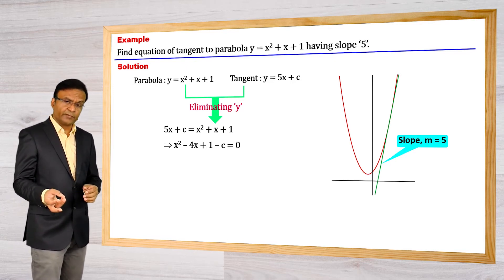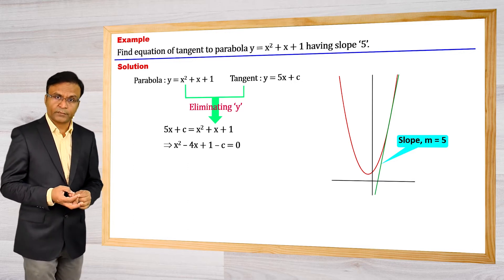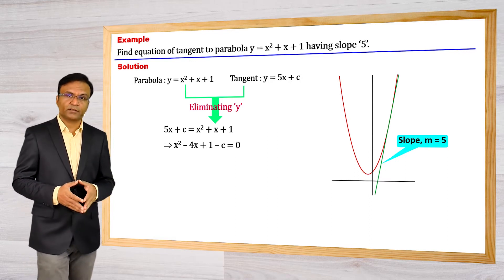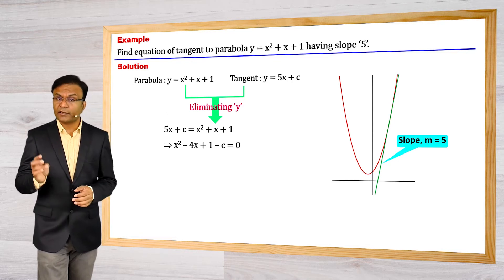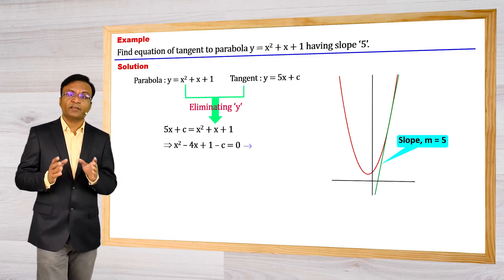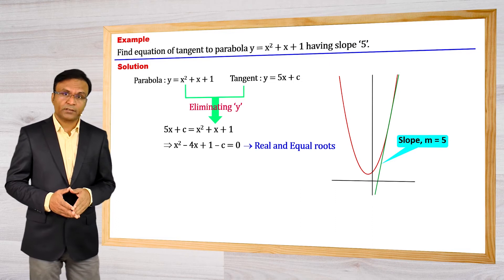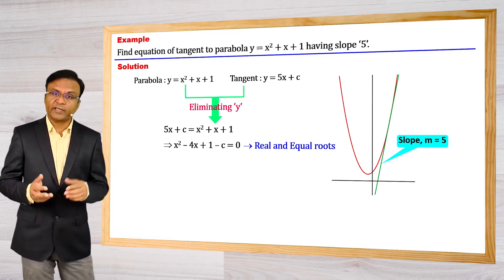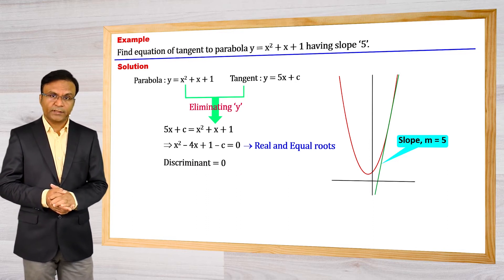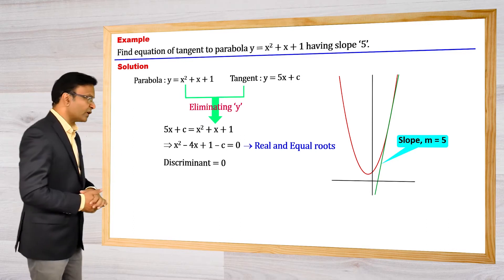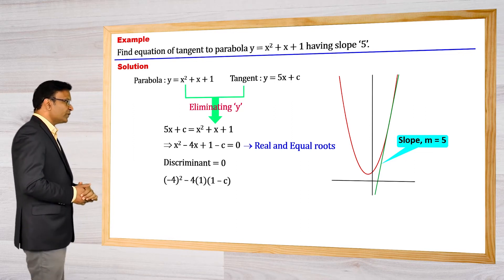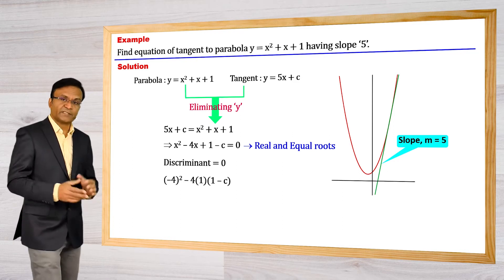Now again the question is: how do we get the value of c? How can we use this quadratic equation to get the value of c? Since the line is touching the parabola, this quadratic equation has real and equal roots, and when roots are real and equal the discriminant is 0. So let us calculate the discriminant of this quadratic.